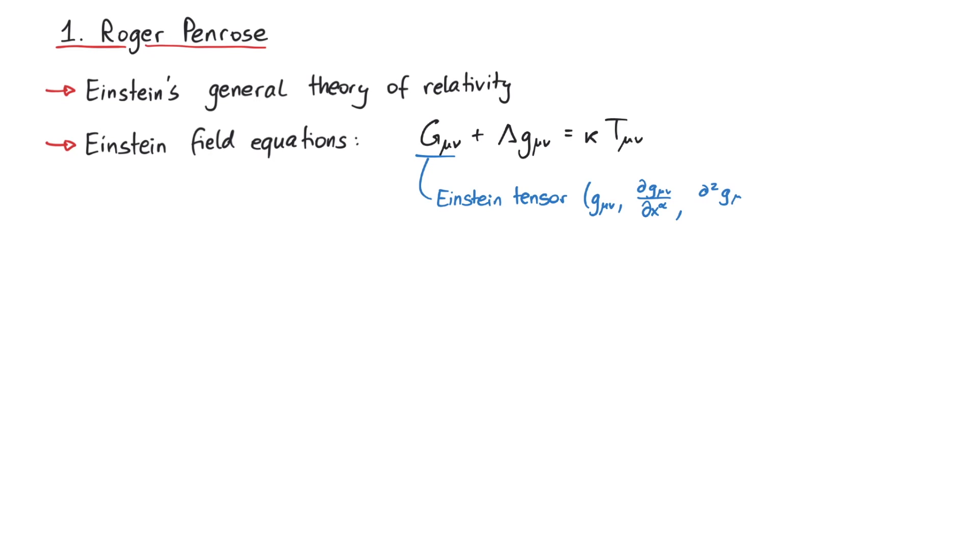When we study the motion of large, heavy objects like the planets and stars in our night sky, our best theory is Einstein's general theory of relativity. Mathematically, it can be expressed in terms of the Einstein field equations, which look like this. On the left, we have the Einstein tensor, which basically is a function of the metric and its first and second derivatives.